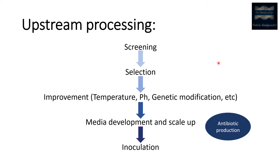To understand upstream processing, let's take an example — curd production, antibiotic production, or any other drug production. To begin with the production, we must require certain kinds of ingredients. In case of curd, that's the best example to understand. We need milk as a media and a bacterial culture, which may contain Lactobacillus and other milk-fermenting bacteria.